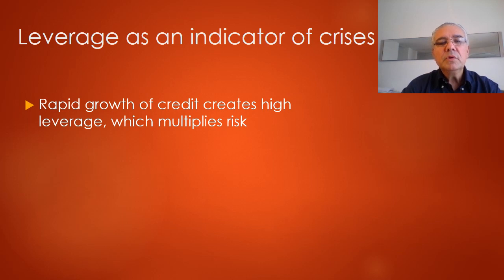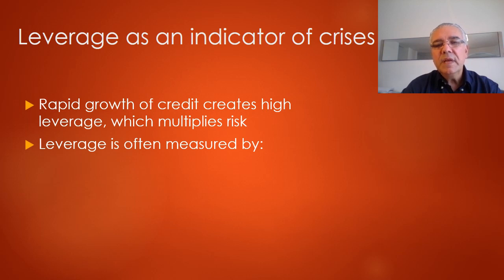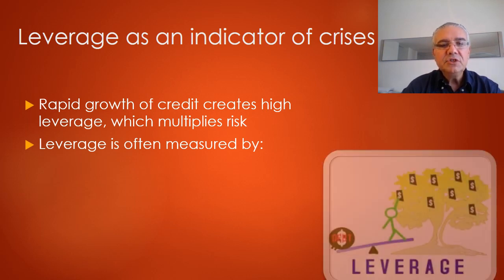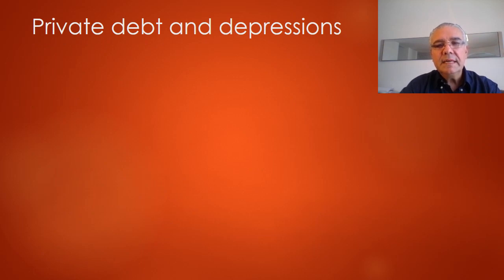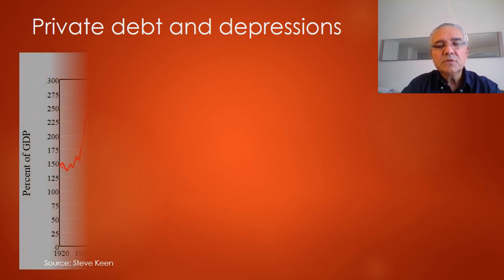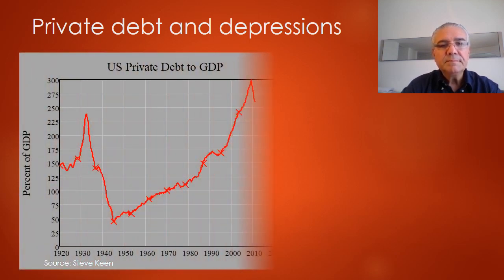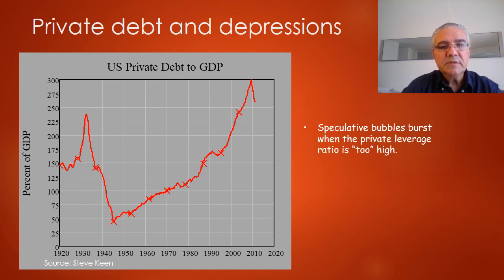Rapid growth of credit creates high leverage, which multiplies risk. We have several indicators of leverage: the level of household debt divided by disposable income, the level of business debt divided by equity, or the level of private debt divided by GDP. We are going to take a look at a graph borrowed from Steve Keen, which is a really interesting graph.